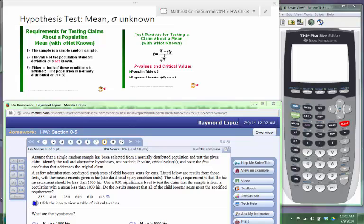Let's do an example from section 8.5 where we're doing a hypothesis test for the mean and sigma is unknown. The requirements for that are we want to make sure that the sample is simple and random, and we want to ensure that we actually don't know sigma.